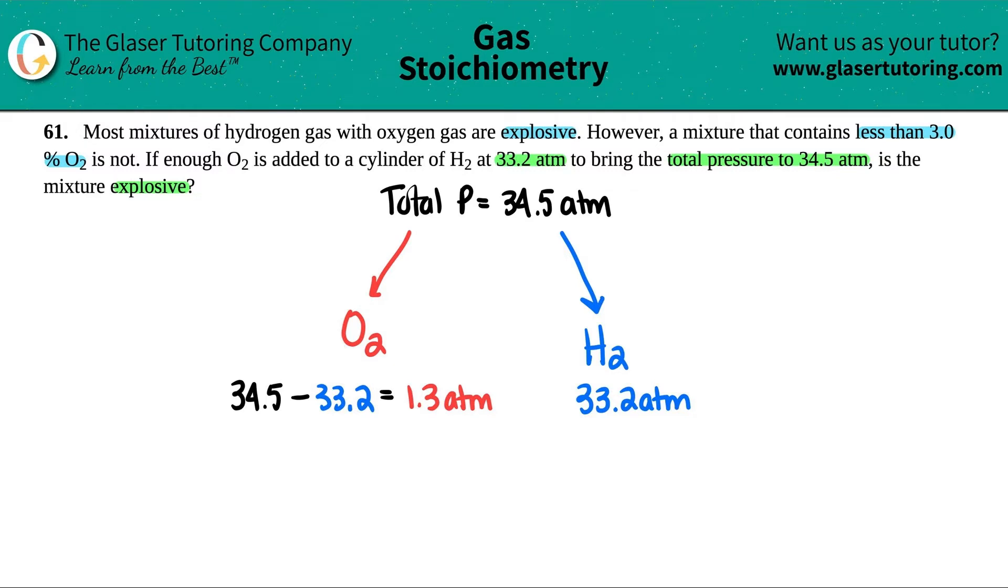So now we just have to figure out what's that percentage. Is this going to be higher than 3% or is it going to be lower than 3%? Well, remember, when we're talking about percentages, a percent formula is just something divided by something times 100. And it's always the part divided by the whole.